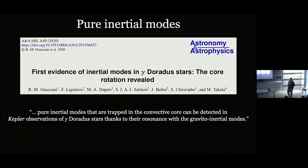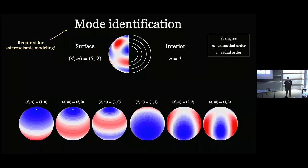As asteroseismologists, we characterize oscillations according to a set of quantum numbers. The degree l is the total number of surface nodes; the azimuthal order m is the number of surface nodes crossing the equator; and the radial order n is the number of nodal concentric shells inside the star. To do asteroseismic modeling, we need to know the mode identification of the oscillations — getting these mode identifications from observations is one of our key challenges.